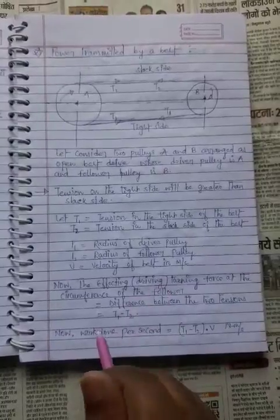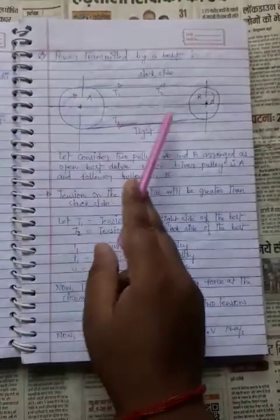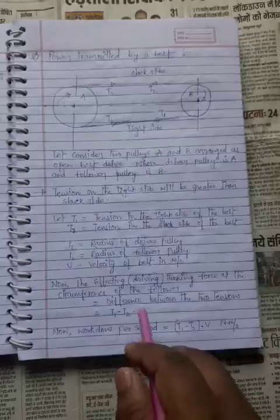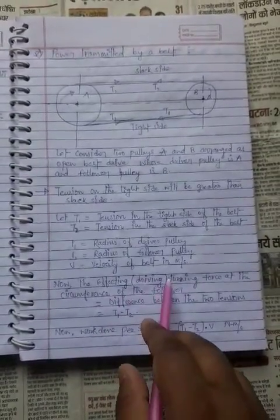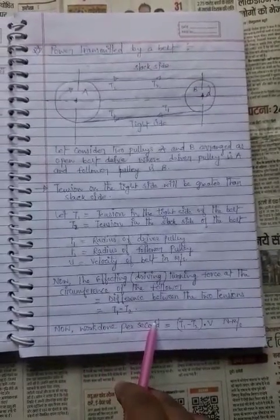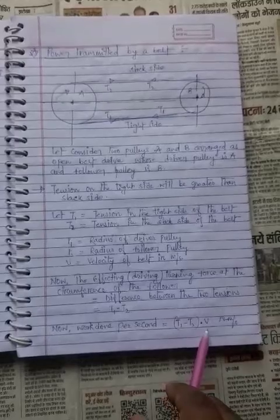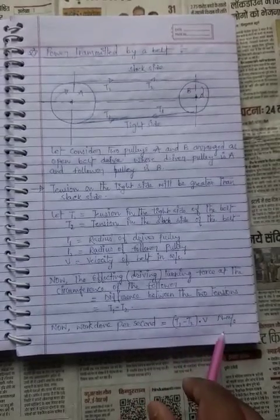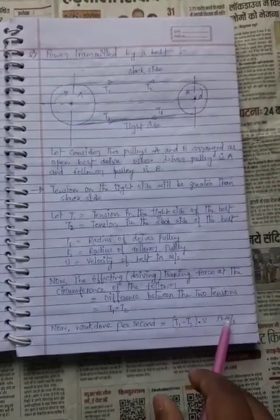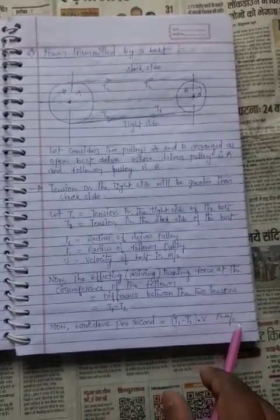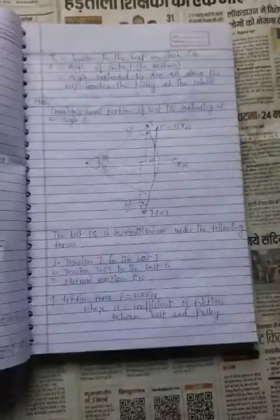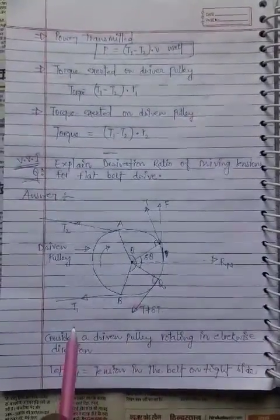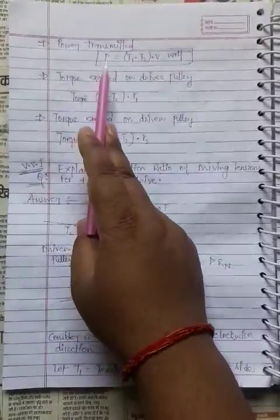The effective turning force between the two pulleys is the difference between two tensions: T1 minus T2. Work done per second equals (T1 minus T2) into v, where v is velocity, T1 is tension on the tight side, and T2 is tension on the slack side — in Newton-meter per second, which equals joules per second. The SI unit of power is watts, so power transmitted P equals (T1 minus T2) into v.